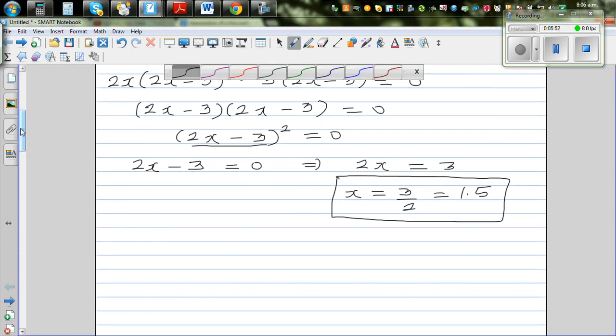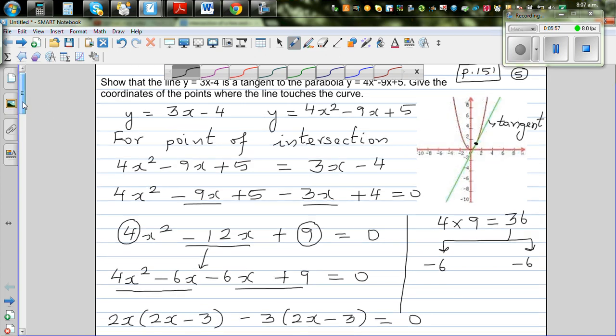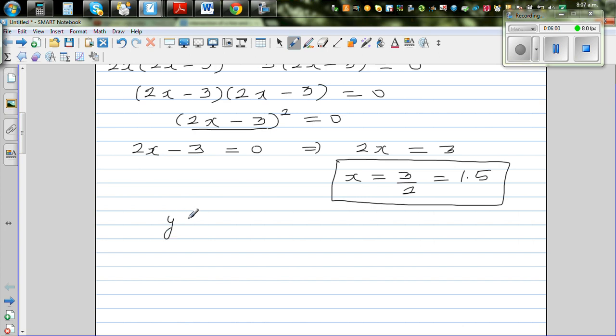Now you know x is 1.5, what is y? You can either use this formula or this formula. Y equals 3x minus 4, which is 3 times 1.5 minus 4. 3 times 1.5 is 4.5 minus 4, which is y equals 0.5. So you can see the point of intersection, the short form that I have made up, which is 1.5 comma 0.5. This is how you do it algebraically.